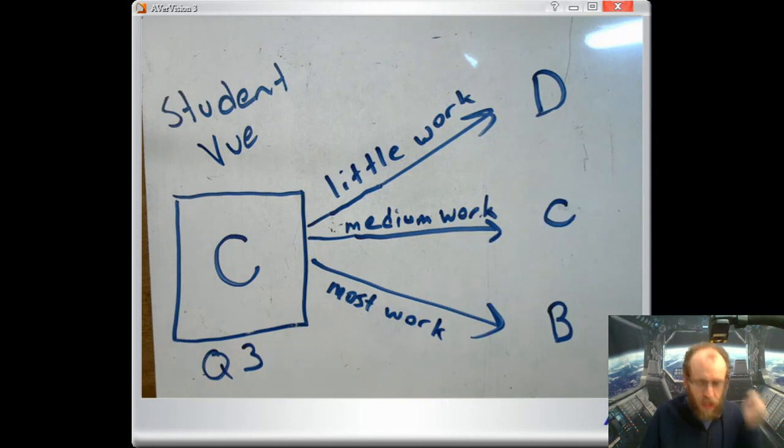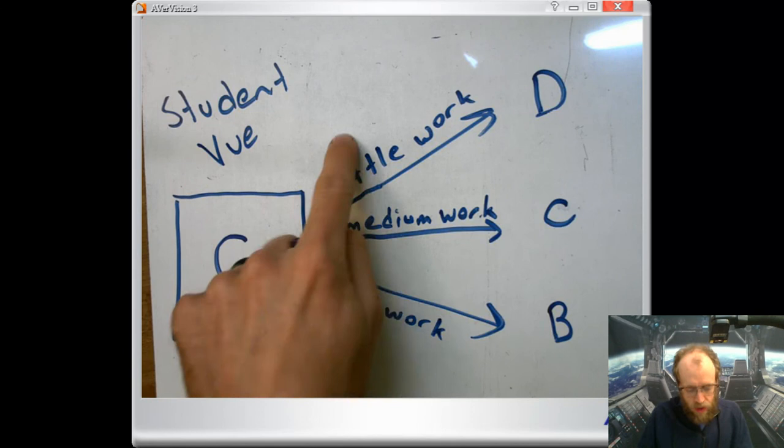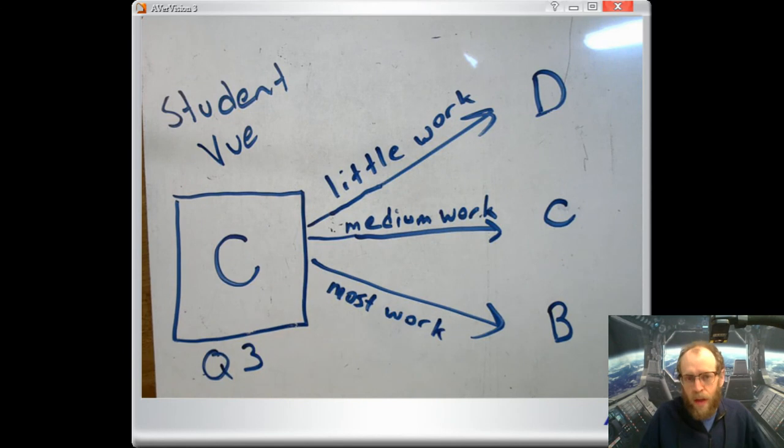So check your quarter three grade and then decide which category you want to be in and make sure you're in that category. And then this will be your fourth quarter grade, which again is an entire semester's worth of credit for geometry. So make it good. All right, let me know if you have any other questions. I'll see you guys later.